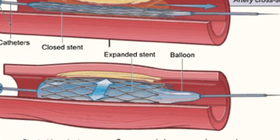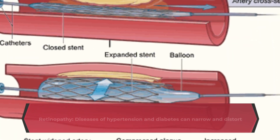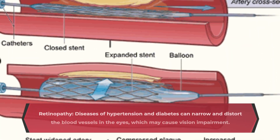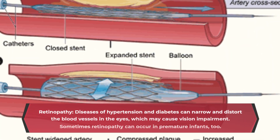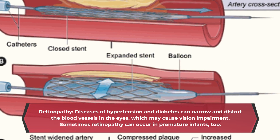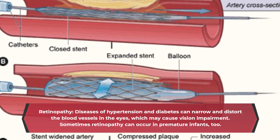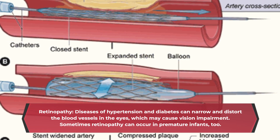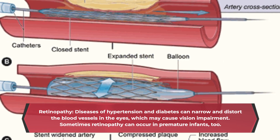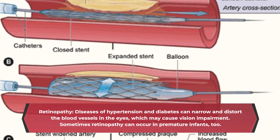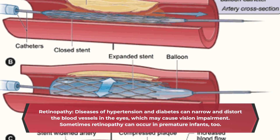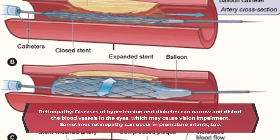Retinopathy: Diseases of hypertension and diabetes can narrow and distort the blood vessels in the eyes, which may cause vision impairment. Sometimes retinopathy can occur in premature infants, too.